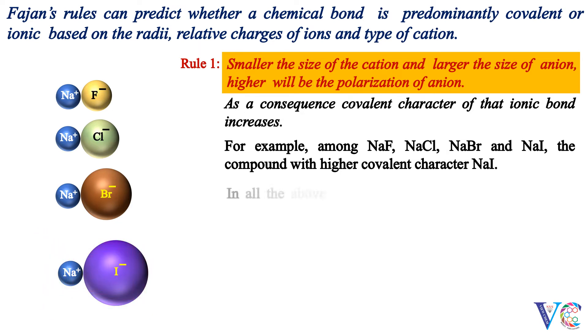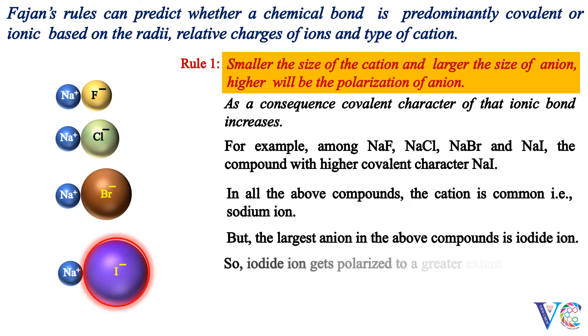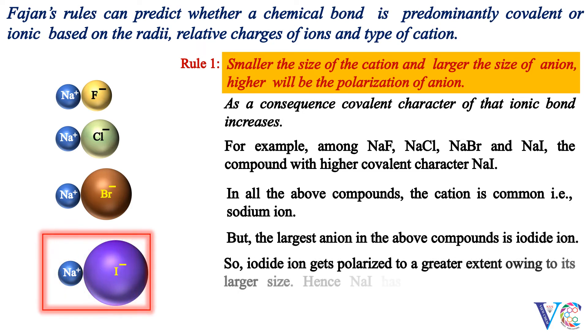In all the above compounds, the cation is common, that is sodium ion. But the largest anion in the above compounds is iodide ion. So iodide ion gets polarized to a greater extent owing to its larger size. Hence sodium iodide has highest covalent character among the 4 sodium halides shown above.